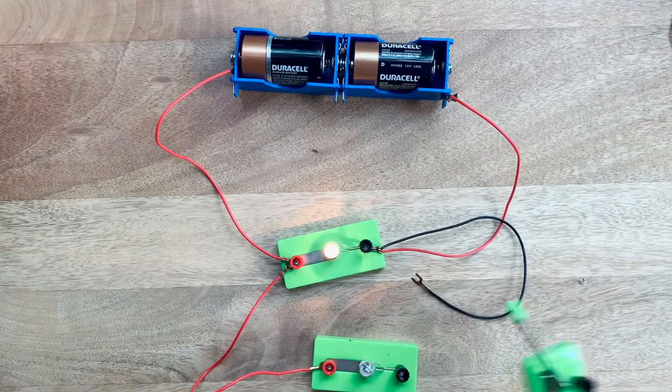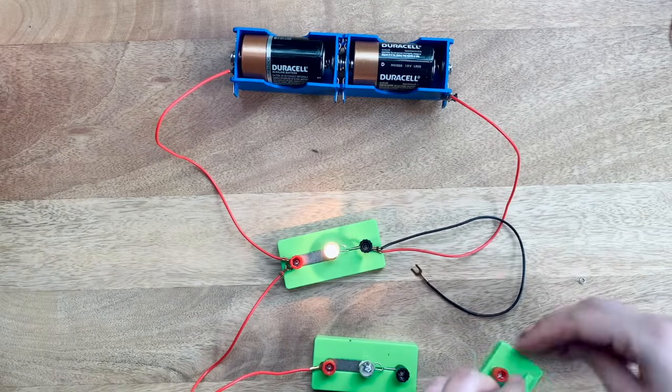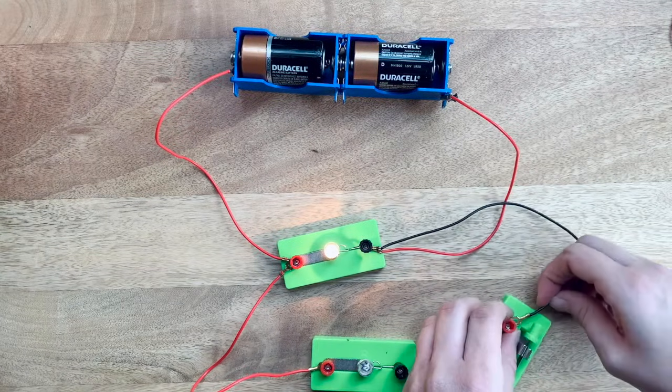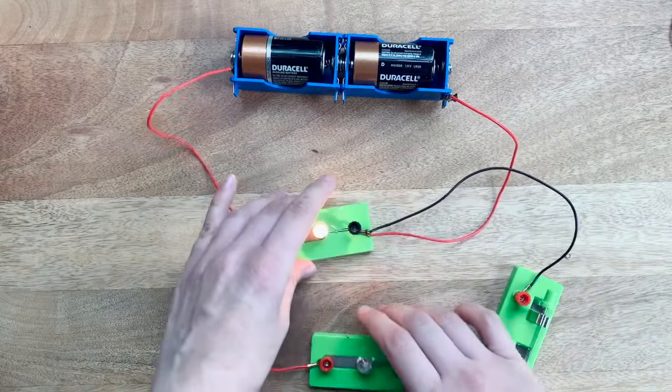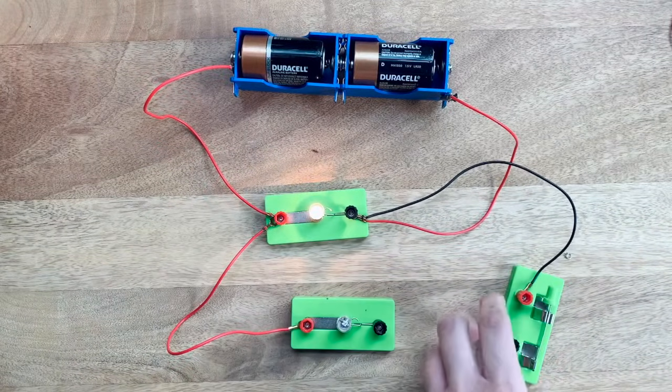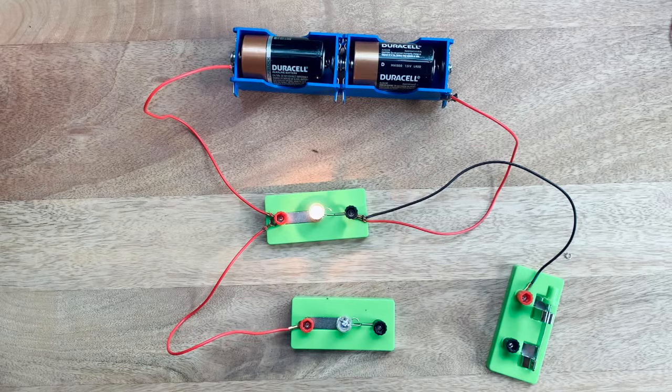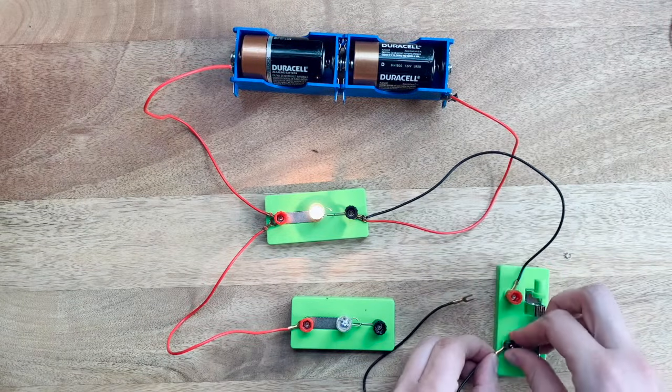Now let's make this a little more complex. We're going to add a switch. So for this parallel circuit I'm going to take the switch and I'm going to take the bulb and I'm going to make sure that they are connected.